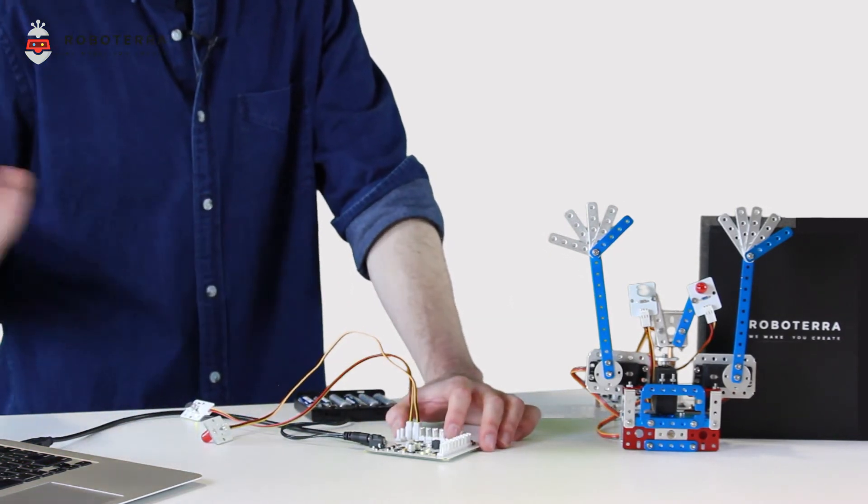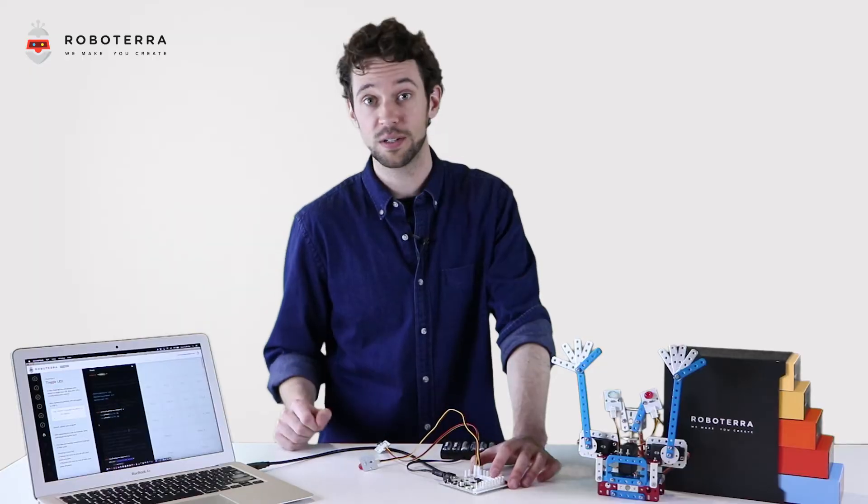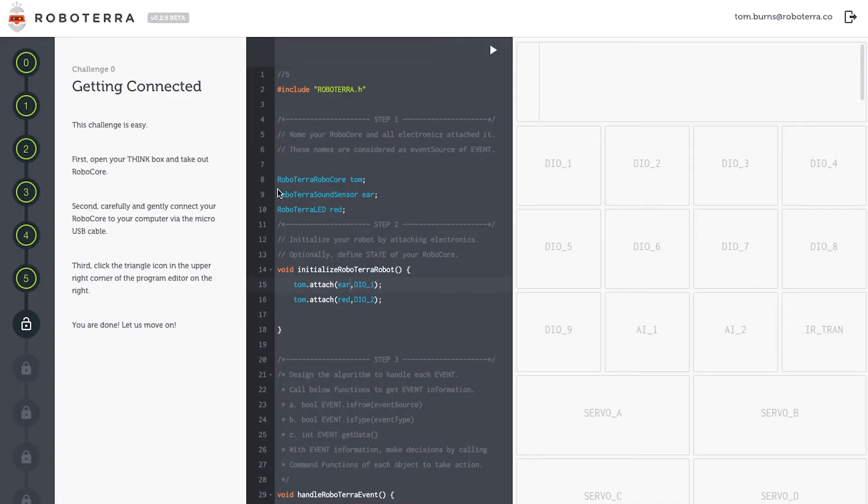My RoboCore is already connected to Castle Rock with a black USB cable, so let's take a look at the coding. First things first, use my class name RoboTerra RoboCore to name my robot, and I'm going to name him Tom like I always do.